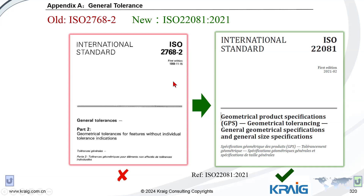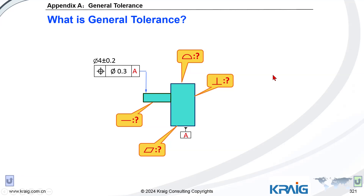Maybe not. Since this old standard has been removed and replaced by the new standard, there must be some reason behind that. When design engineers make a drawing, they specify important tolerances based on function, and for many places that are not important they choose not to put any tolerance — and that makes sense. For example, if a surface is not important, you don't have to specifically put a tolerance there; you can rely on the general tolerance.